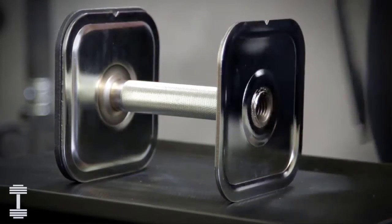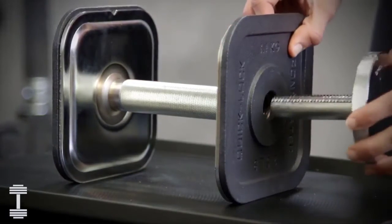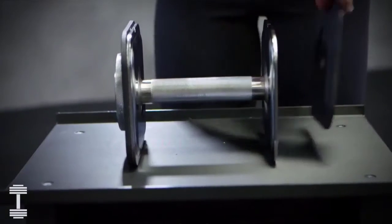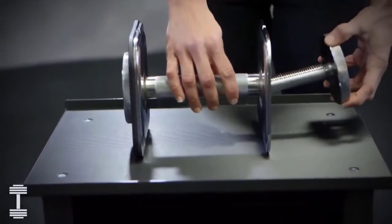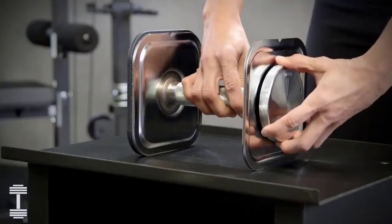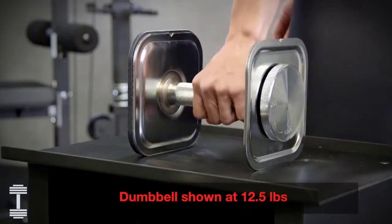The system comes with four 2.5 pound plates to make small weight changes. Normally, you'll load the same number of plates on both ends of the dumbbell. To make a small 2.5 pound change, you'll just load one 2.5 pound plate on the end of the dumbbell.